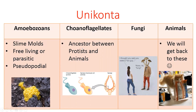Choanoflagellates are super important because they are the ancestor between protists and animals. You can see in this image how similar a choanoflagellate looks to a sponge collar cell. We'll talk about more of that in the next slide. And then lastly you've got fungi and animals, which we'll talk more about later in this course.